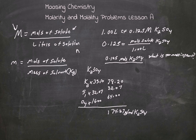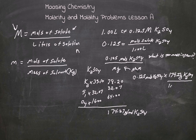Now we go from moles back to grams: 0.125 moles of K₂SO₄ times 174.27 grams of K₂SO₄ per mole of K₂SO₄. The moles cancel out, giving exactly 21.78 grams of K₂SO₄.